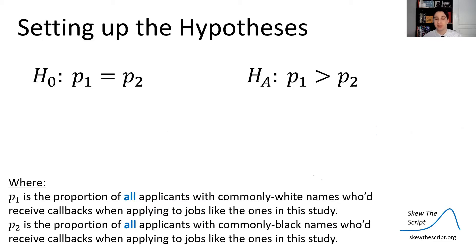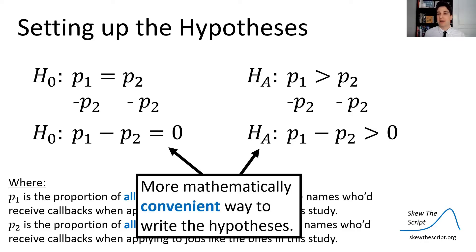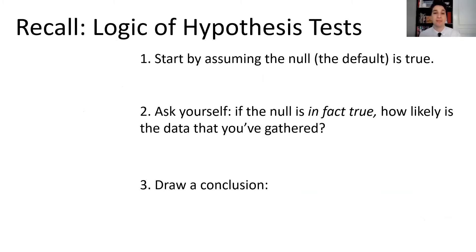Now to make this a little bit more mathematically convenient for us, we can just do some simple algebra to simplify these hypotheses a little bit. Subtract P2 from both sides. In the null hypothesis, P1 minus P2 is equal to zero, meaning that you're assuming the proportions are equal, so when you subtract you get zero. The alternative, if you subtract P2 from both sides, is P1 minus P2 is greater than zero. The proportion of callbacks among the white group is higher, so therefore when you subtract you get a positive number. This is a more mathematically convenient way to set up these hypotheses.